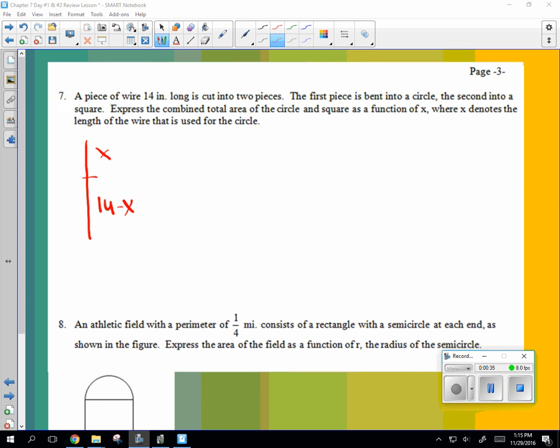The first piece is bent into a circle. Okay. So this one, we're going to bend into a circle and the second is bent into a square.